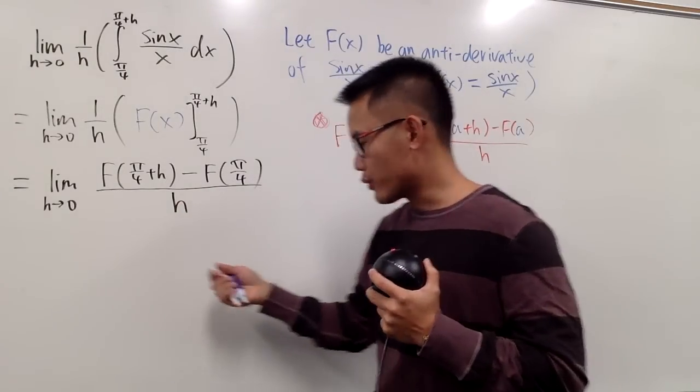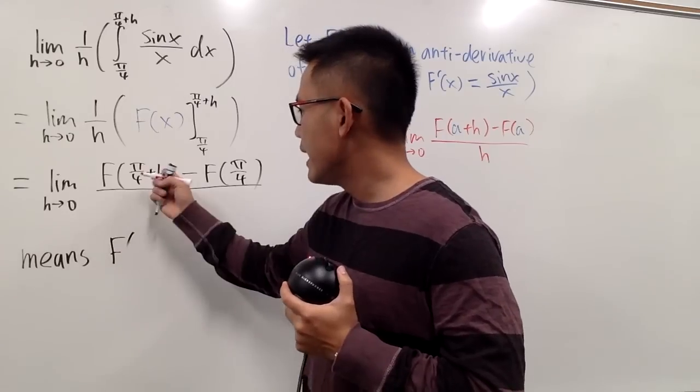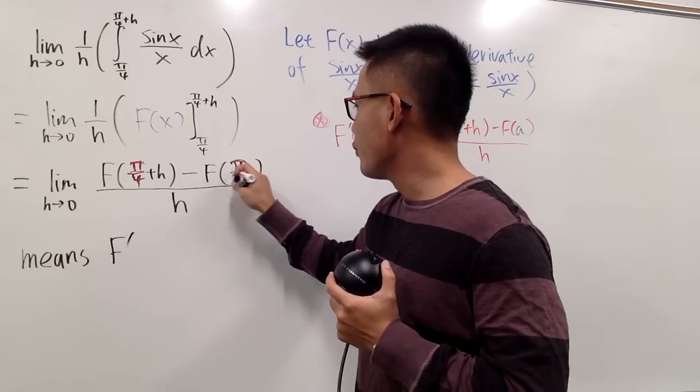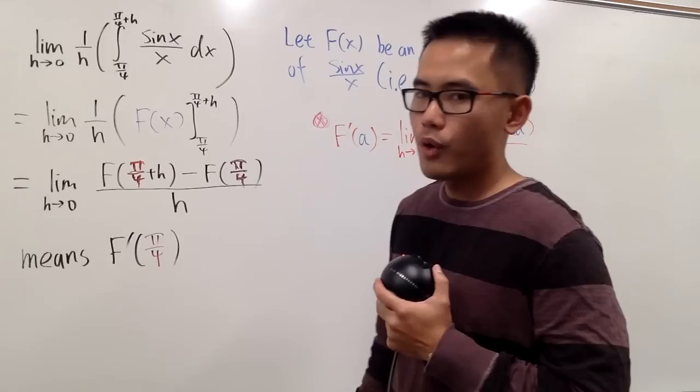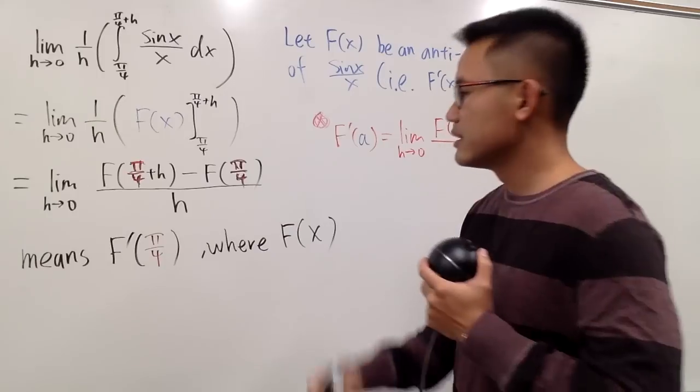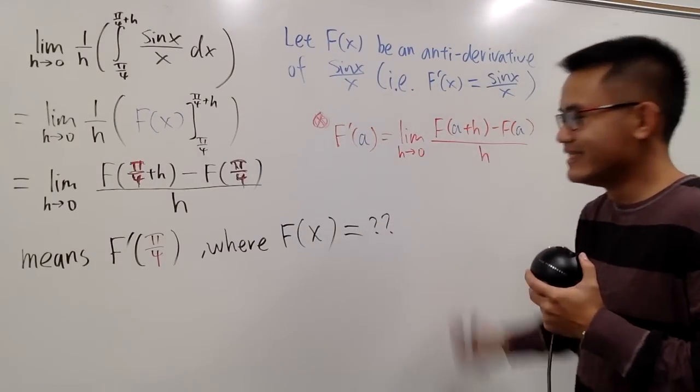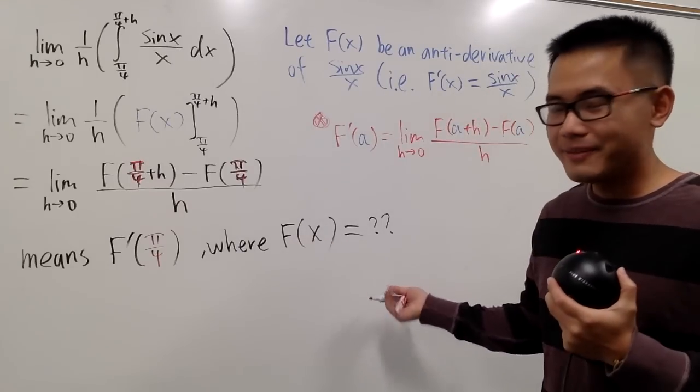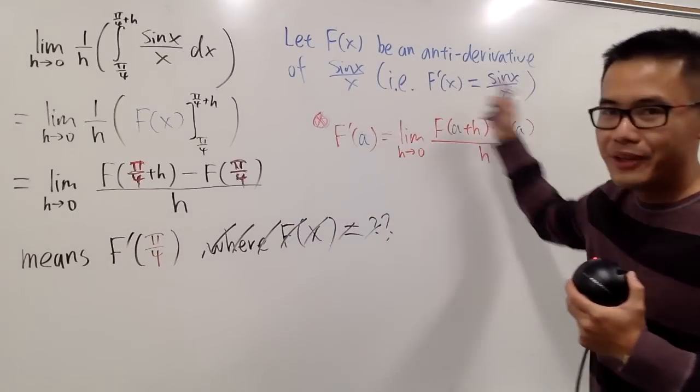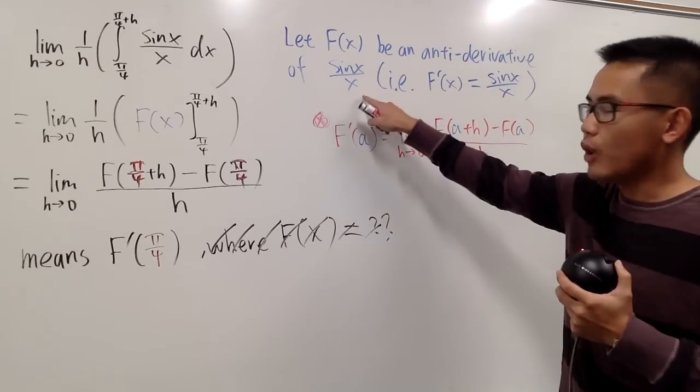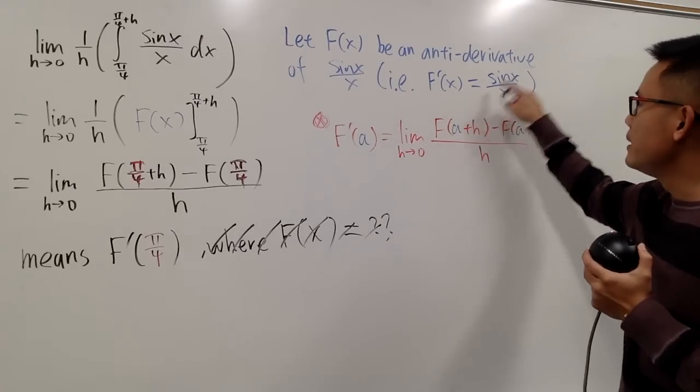And now, this is what we have as well. This means this represents F'(π/4), where F(x) is equal to what? Well, F(x), I don't know, because F(x) is just an anti-derivative. I really don't know what this is. Usually we will be able to tell what capital F(x) is. But look here. This represents F'(π/4). F(x) is an anti-derivative of sin(x)/x, but I just couldn't write down a nice formula here on the right-hand side.